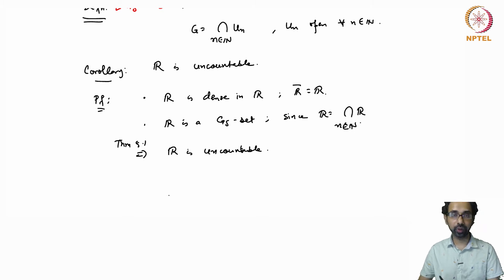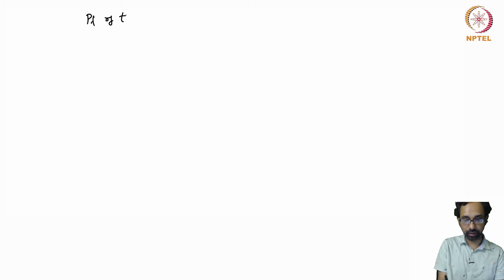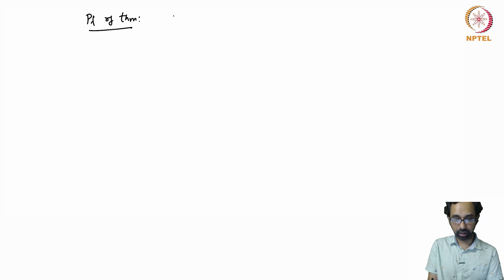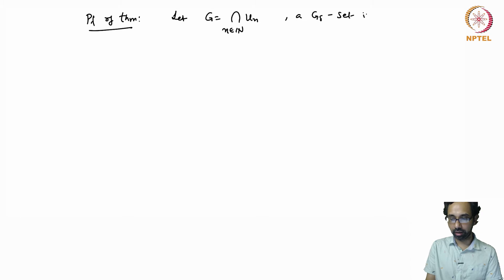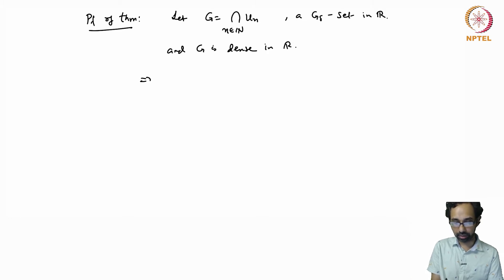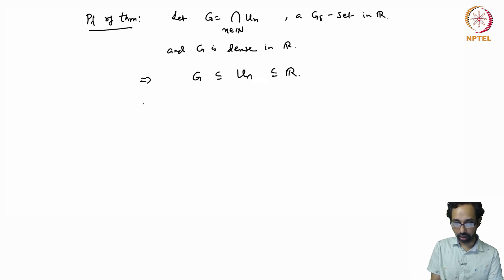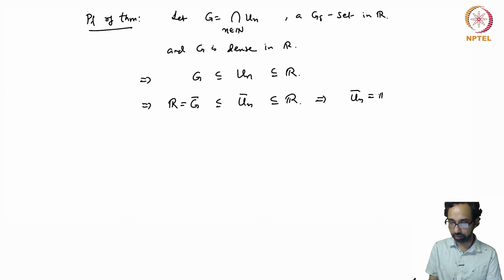Let us show why dense G-delta sets are uncountable. Suppose G is a G-delta set — a countable intersection of open sets Uₙ in R — and G is dense in R. Since G is a subset of each Uₙ, taking closures gives that R, the closure of G, is a subset of the closure of each Uₙ, which is a subset of R. This means each Uₙ is dense.